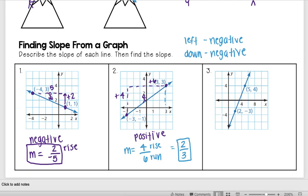...going down four and to the left six. So that would have been negative four over negative six. But if you remember, two negatives make a positive, so this still would have been two-thirds.